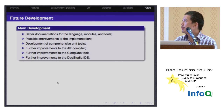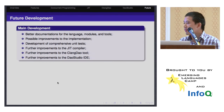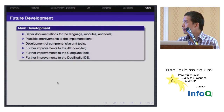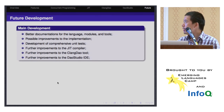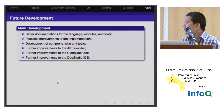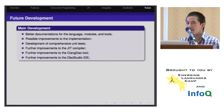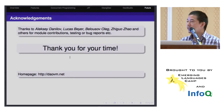Here are some future plans. Since I spent most of the time developing features, I didn't spend much time on documentation, so there are a lot of documentation improvements to be done. There are also some possible improvements to the implementation that I plan to do, and the language also needs comprehensive unit tests. There are also some planned improvements to the JIT compiler, ClamDAO, and DAO Studio. Okay, that's all. Thank you for your time.